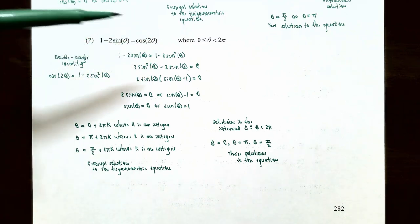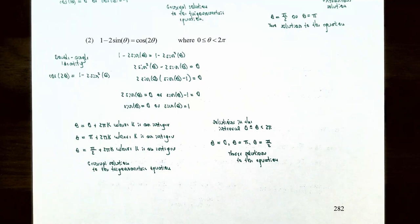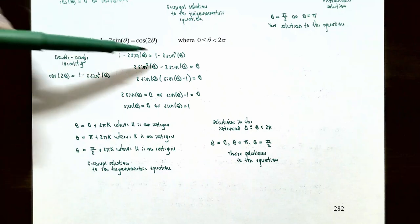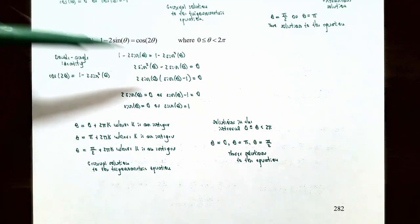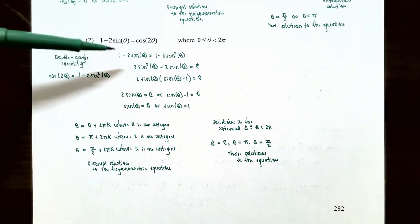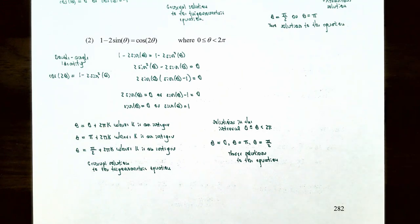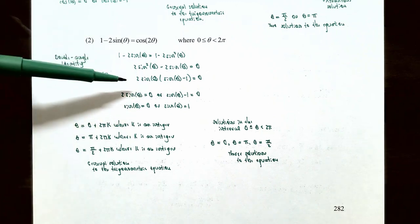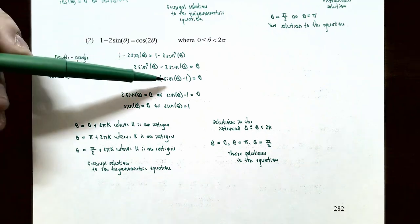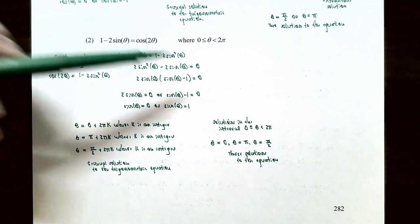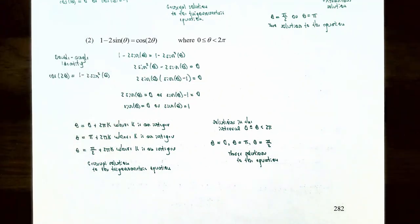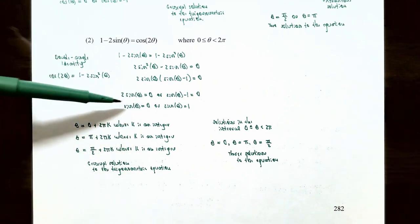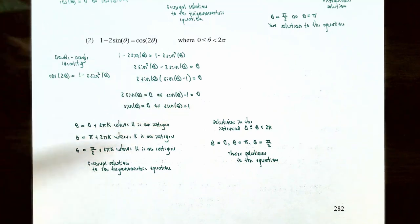We have sine of theta and sine squared of theta. Moving all terms to one side: subtracting one and adding two sine squared theta to the left gives two sine squared theta minus two sine theta equals zero. Both terms share a GCF of two sine theta, so factoring gives two sine theta times the quantity sine theta minus one equals zero. Setting each factor to zero: sine theta equals zero, or sine theta equals one.